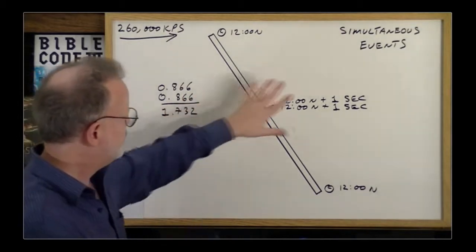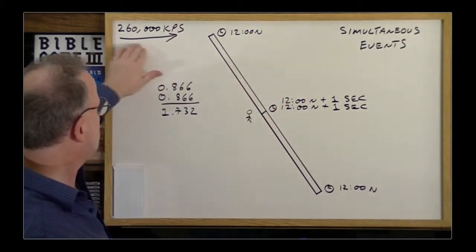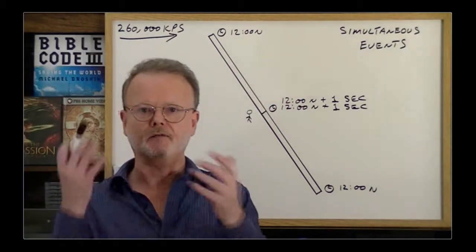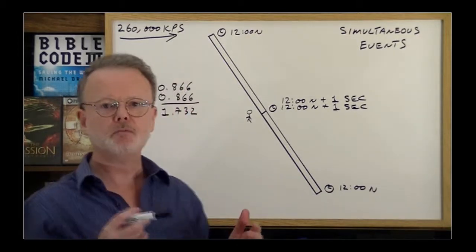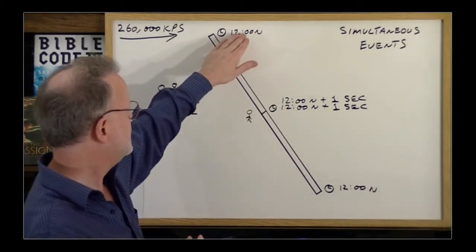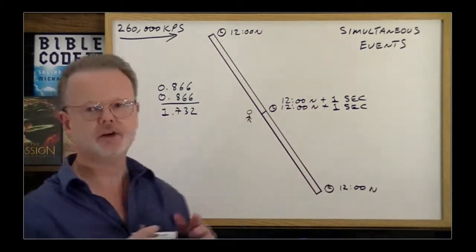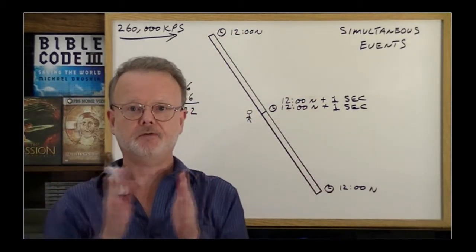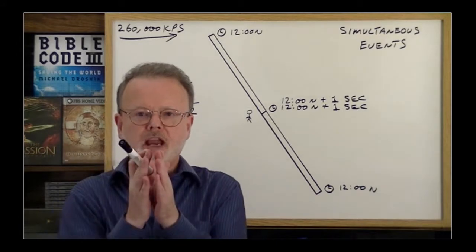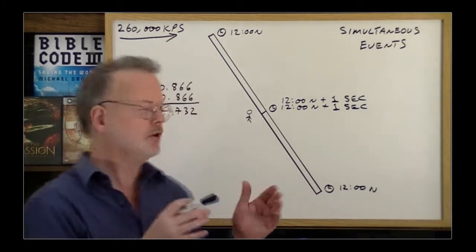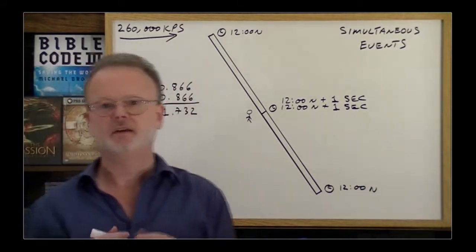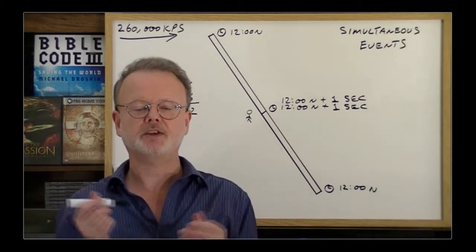So, now other people passing by here at different velocities, different than the 260, a variety, let's say, they would all measure the time between the time period, that gap between the flash here and the flash here, as different timings, different gaps between. Some almost no gap at all, others, you know, close to 1.732,